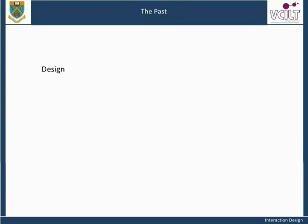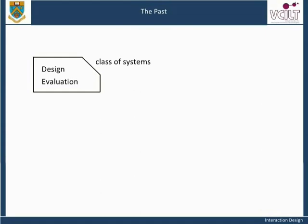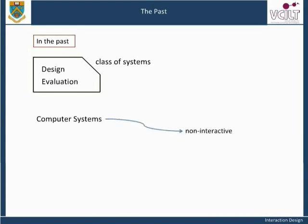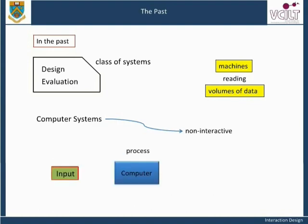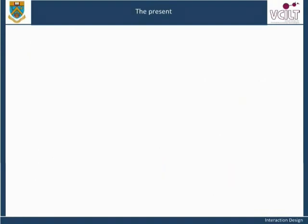This module is about the design and evaluation of a class of systems that were not even envisaged until relatively recently. Until the 1980s, almost all commercial computer systems were non-interactive. Computer operators would set up the machines to read in large volumes of data, say customers' bank details and transactions, and the computer would then process each input and generate appropriate output. There are still lots of these systems in place, but the world is also now full of interactive computer systems.